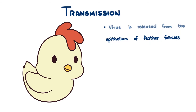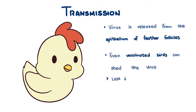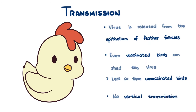Infection spreads quickly from bird to bird. Even vaccinated birds can shed the virus, less so than unvaccinated birds, but they still can. Fortunately, Marek's disease is not known to be transmitted vertically.